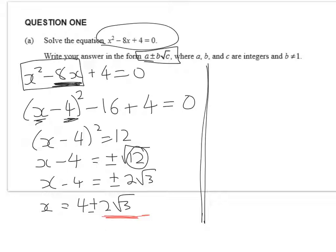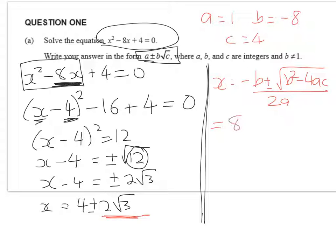So now just to keep you happy, I will do a quadratic formula on this. We've got a equals 1, b equals negative 8, and c equals 4. So x is equal to negative b plus or minus root b squared minus 4ac over 2a. So that equals 8 plus or minus the square root of 64 minus 16 over 2.